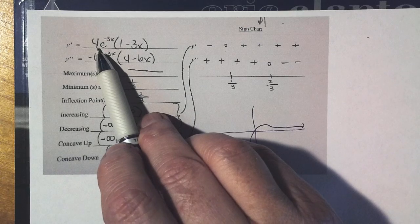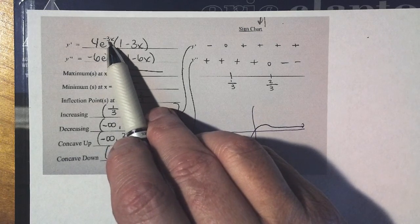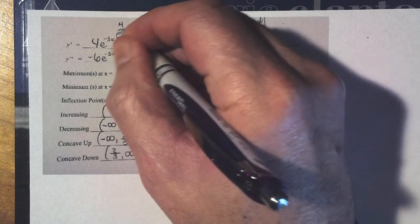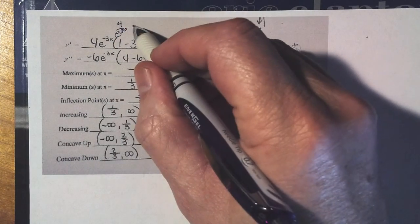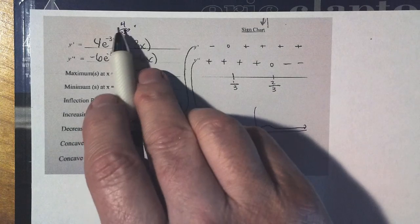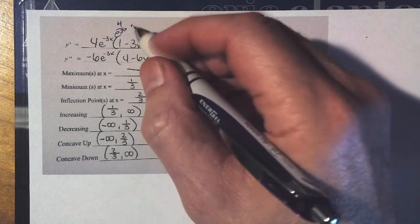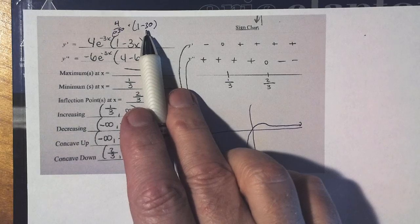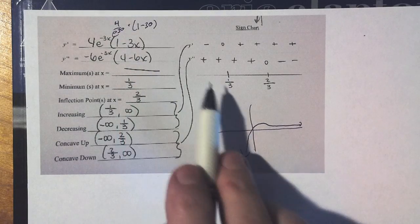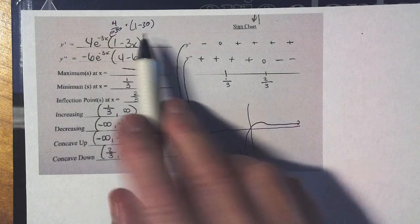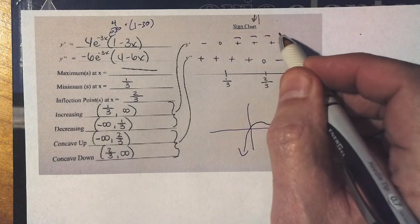If I put in 10 here, this is 4e to the negative thirtieth, but that is 4 on e to the thirtieth. That's a positive. 4e to the negative thirtieth is 4 on e to the thirtieth times 1 minus 30, and that is definitely a negative. So to the right of one-third, we've got a positive times a negative. This is negative.